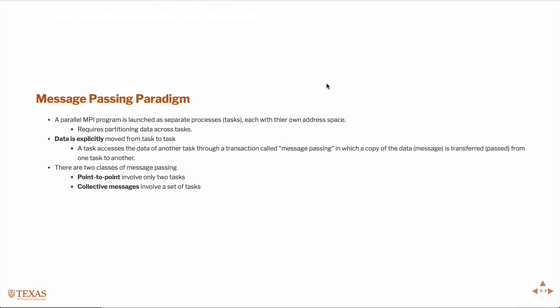In MPI, we launch a program as basically separate tasks, each with their own address space and memory. This requires us to partition the data across tasks. So we could have one large dataset, split it up into different chunks, send those chunks to each individual processor to have some work done on them, and then either reassemble it or do some type of parallel reduction as we bring the data back to a single processor for printing to disk or screen or plotting. Data is explicitly moved from task to task — this is where the message passing comes from. We are explicitly going to send and explicitly going to receive messages.